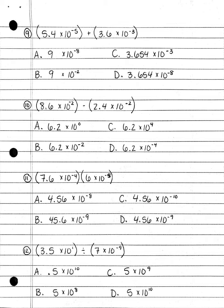Number 11. 7.6 times 10 to the negative fourth times 6.6 times 10 to the negative fifth power: A. 4.56 times 10 to the negative eighth; B. 45.6 times 10 to the negative ninth power; C. 4.56 times 10 to the negative tenth power; or D. 4.56 times 10 to the negative ninth power.